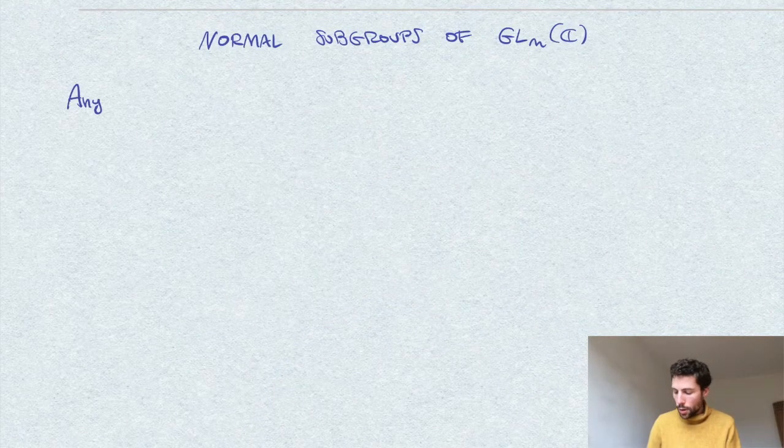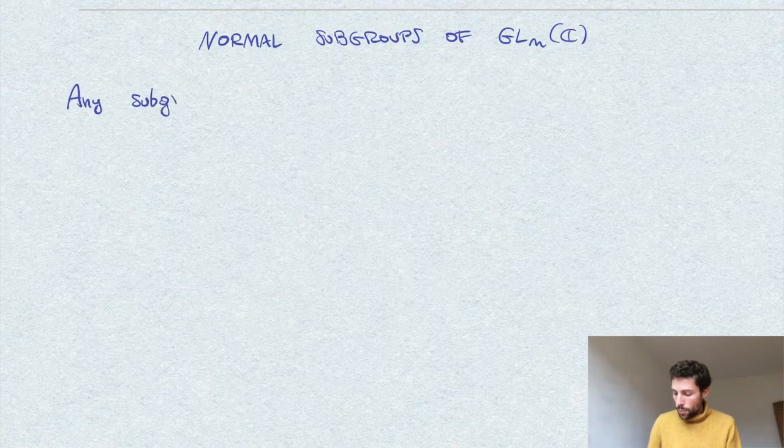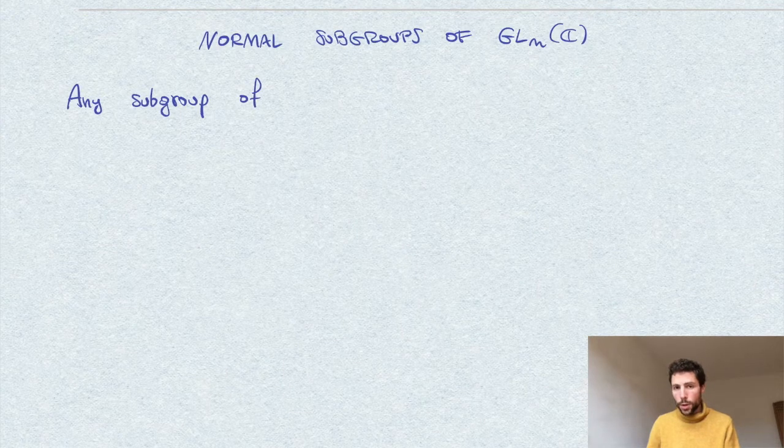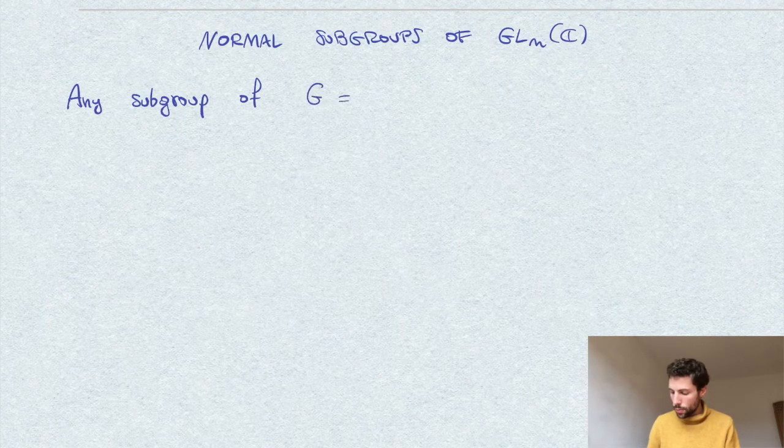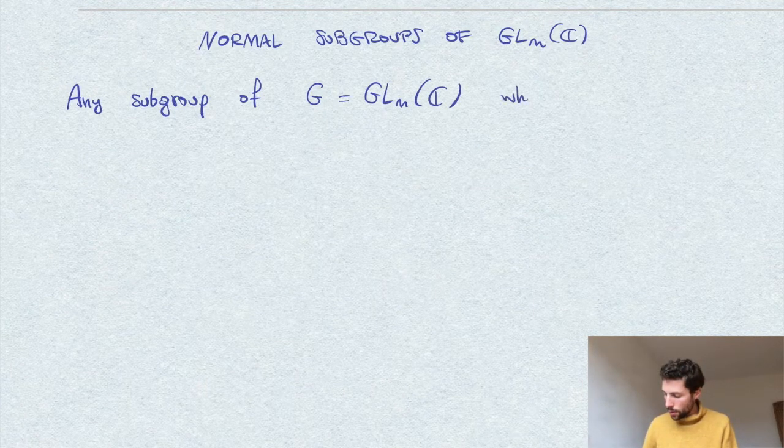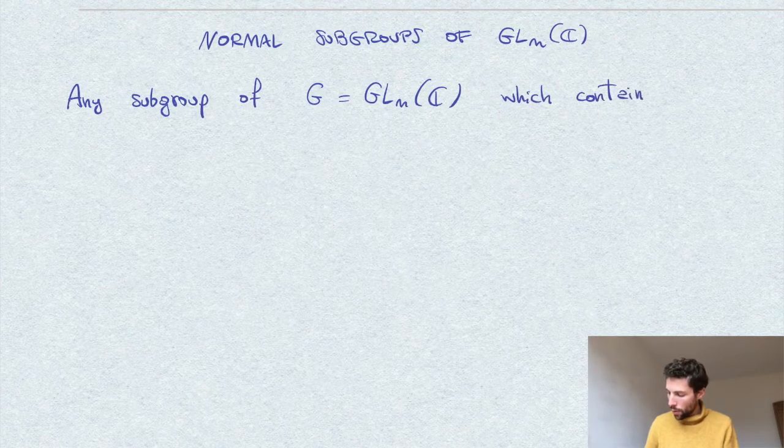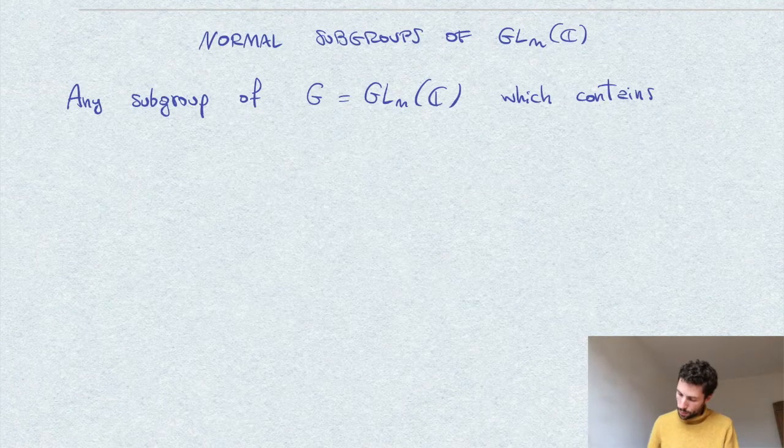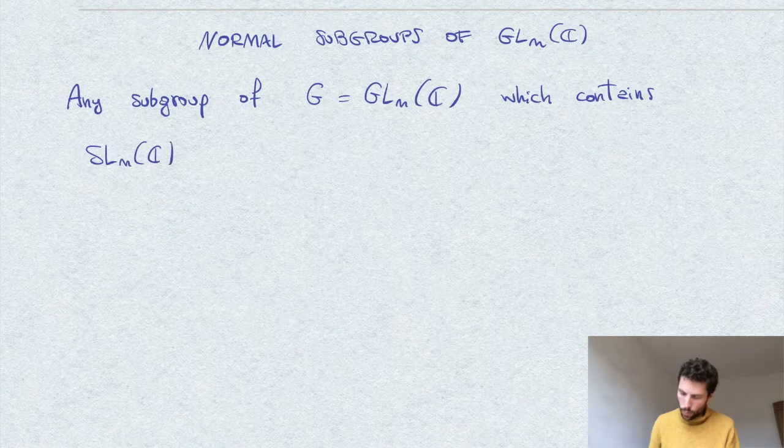In general, dealing with normal subgroups might not be an easy task. But the simple thing is that if a subgroup contains the special linear group SL_n, then it is automatically normal. So any subgroup of GL_n(C) which contains the special linear group is normal.